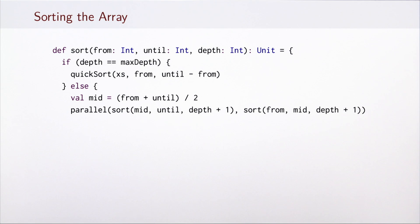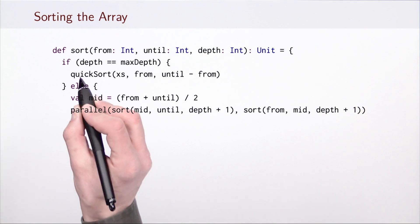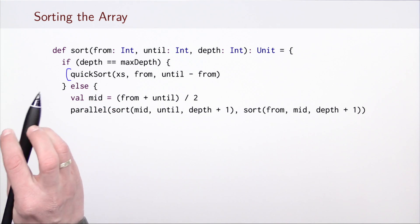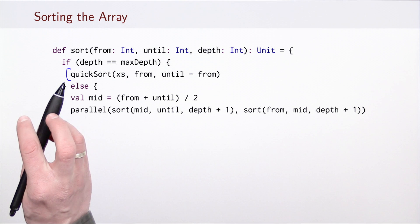The shape of parallel merge sort is similar to the shape of many other divide and conquer parallel algorithms that we have seen. In the base case we're just going to invoke the sequential sorting algorithm. In this case this will be a quick sort.